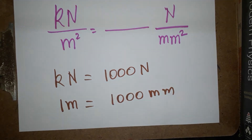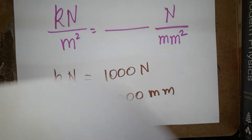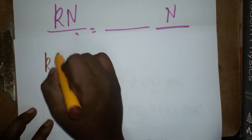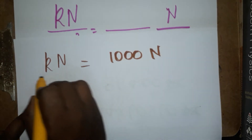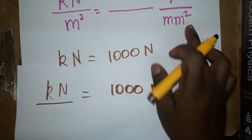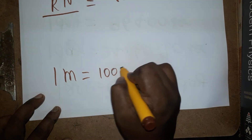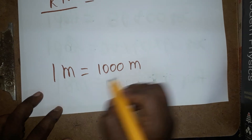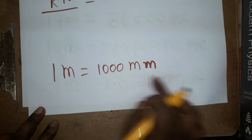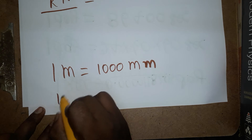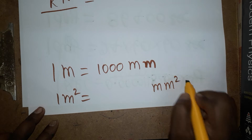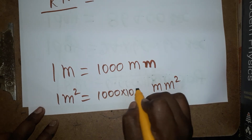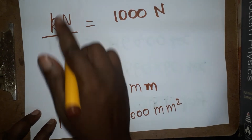Now we are going to learn the conversion. One kilonewton equals one thousand newtons. For the area unit, one meter equals one thousand millimeters, so one meter square equals one thousand squared millimeter square — that is, one thousand into one thousand millimeter square.